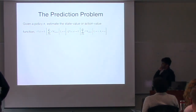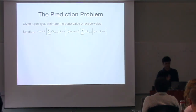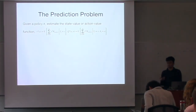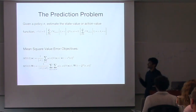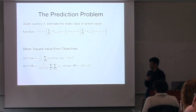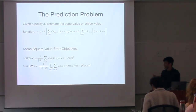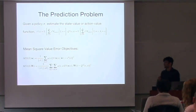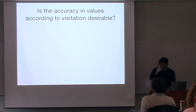First let's talk about the prediction problem. In the prediction problem, you're given a policy pi, and you're asked to estimate the state value function or the action value function, which is essentially the expected return that you get from a state or state-action pair. We usually think of it through different objectives, and a common objective we try to minimize is the mean squared value error - the squared error in our estimate of the value for each state, weighted by how often we visit that state. And is this actually desirable is a good question.